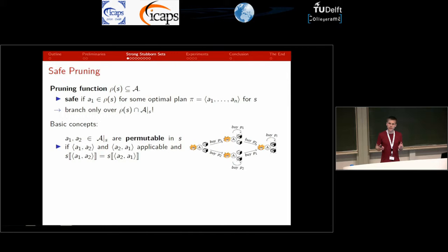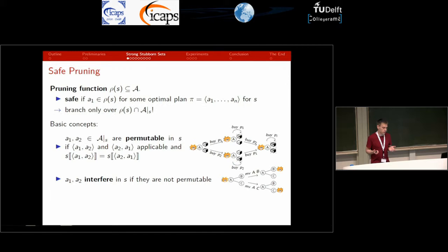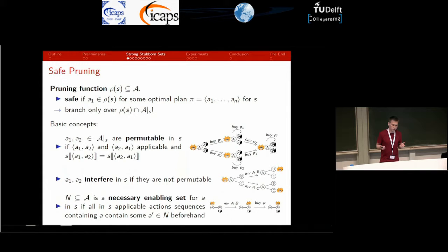Formally, two applicable actions are called permutable in a state if they can be applied in any order and both orders lead to the same resulting state. Vice versa, two actions are interfering in a state if they are not permutable in that state. The final ingredient required is necessary enabling sets. A necessary enabling set for an action A in a state is a set of actions such that every applicable action sequence containing A also contains another action from the set before the first occurrence of A.